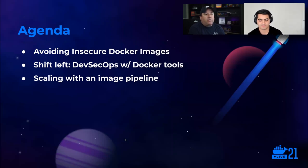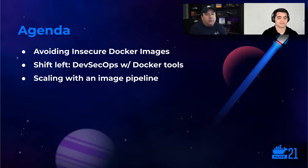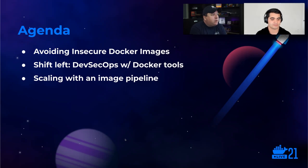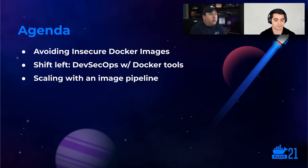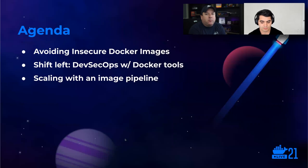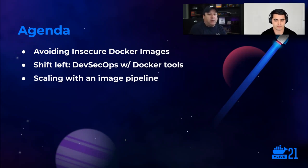Let's talk a little bit about what we're going to go over today. We're going to start with a discussion about insecure Docker images and the tooling and processes you can use to get away from that. Then we're going to get into what Docker's tools offer for supporting your efforts to shift security left in your pipelines and support a DevSecOps methodology. And then we're going to take all of that and turn it into how you scale that up using image pipelines and other techniques.